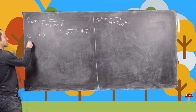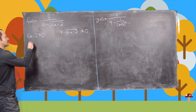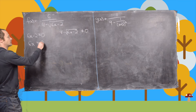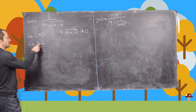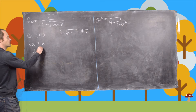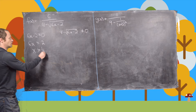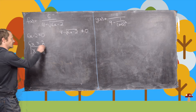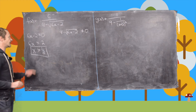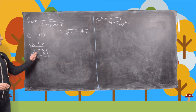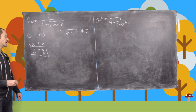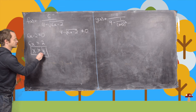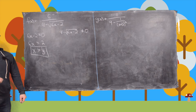For the first condition, this gives us 6x has to be bigger than or equal to 2, which tells us x needs to be bigger than or equal to 2 over 6, which is 1 third. So we've reduced this down to a very simple condition: x has to be bigger than or equal to 1 third.